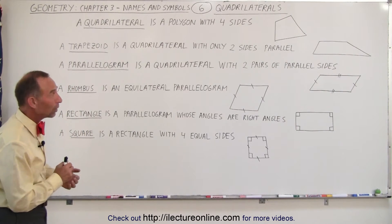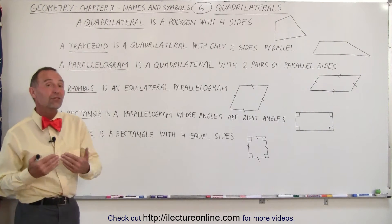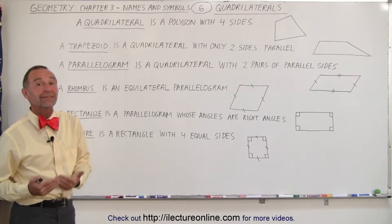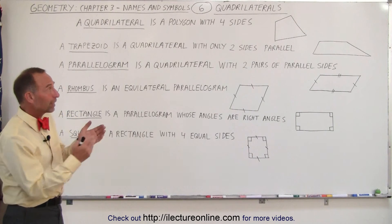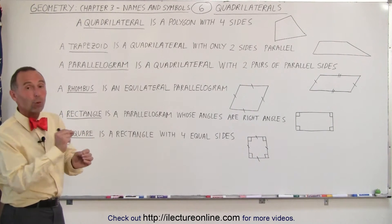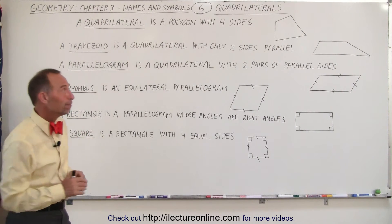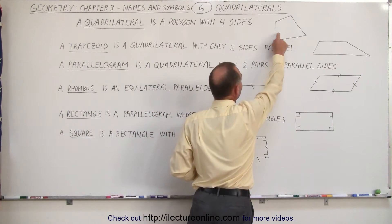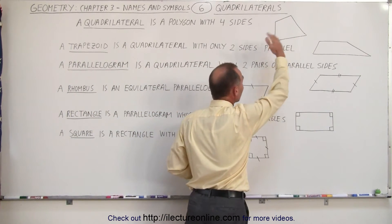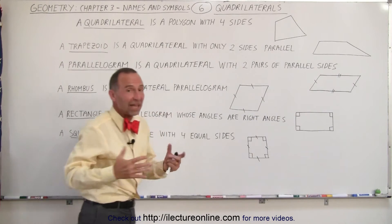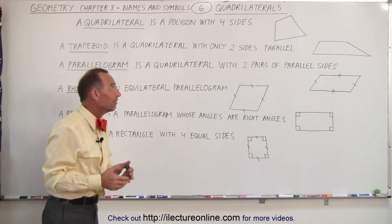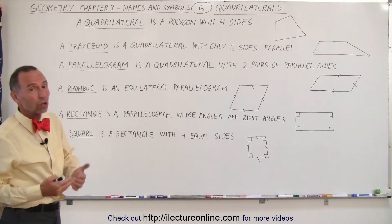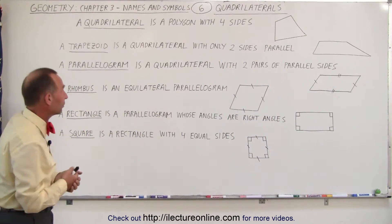What is a quadrilateral? Quad means four and lateral means sides — that means a figure that has four sides. Here's an example of what a quadrilateral could look like. There's no symmetry anywhere, just any different kind of angles. As long as it has four sides and four angles, we call it a quadrilateral.